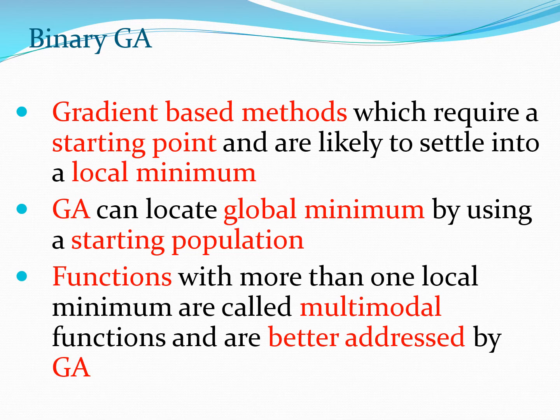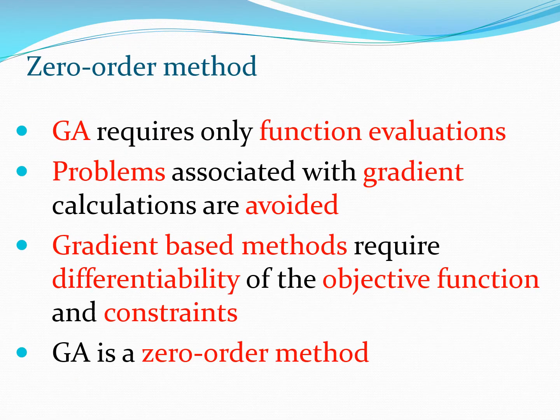Functions which have more than one local minimum are called multi-modal functions, and it's better to use GA to find the optimum of such functions. Though you can use multi-start methods, where you start gradient-based methods from many different starting points, one more advantage of GA is that it typically requires you to calculate only the function values — the values of f(x). Therefore, all the problems which plague gradient-based methods can be surmounted to some extent.